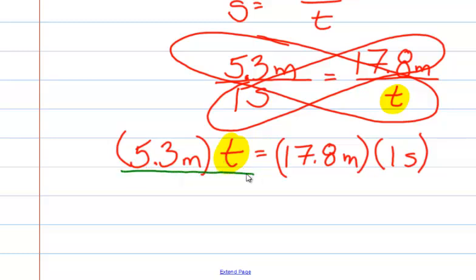So we're going to divide by 5.3 meters. But if we do that over here, we also need to do that on this side. Whatever we do to one side, we have to do to the other.